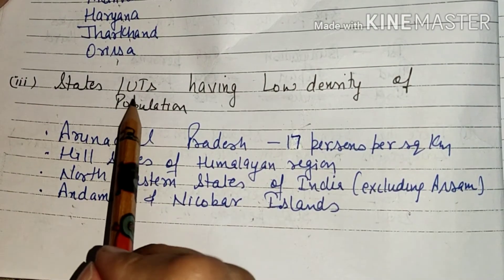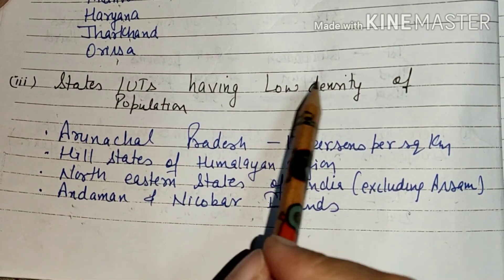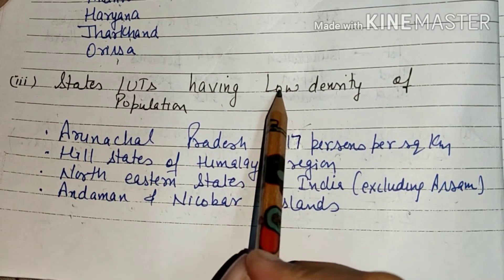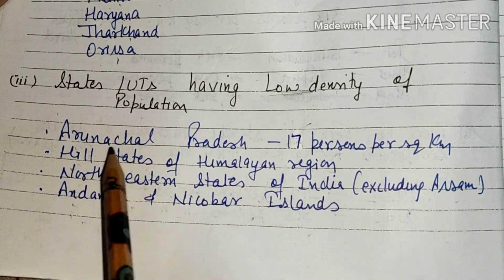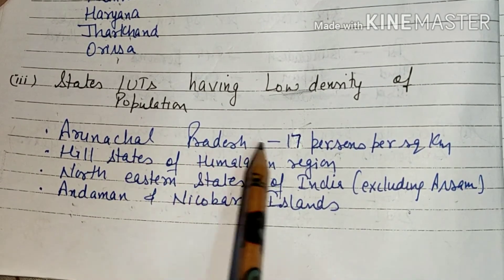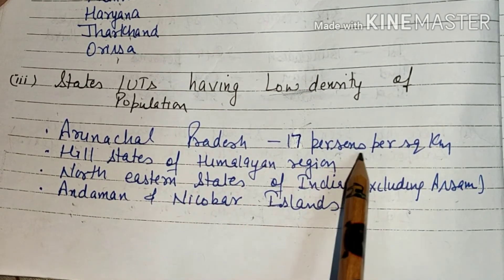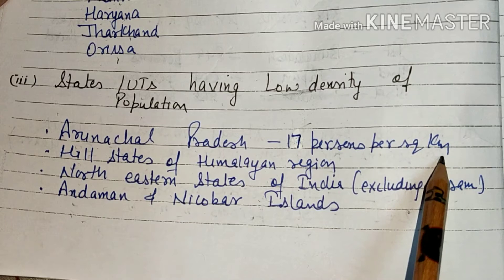States and Union Territories having low density of population: In Arunachal Pradesh, there are only 17 persons per square kilometer — very low density.